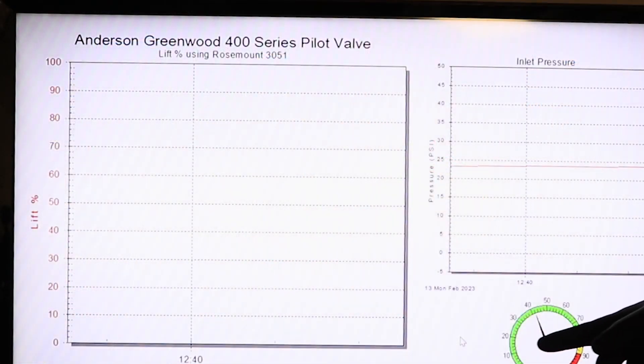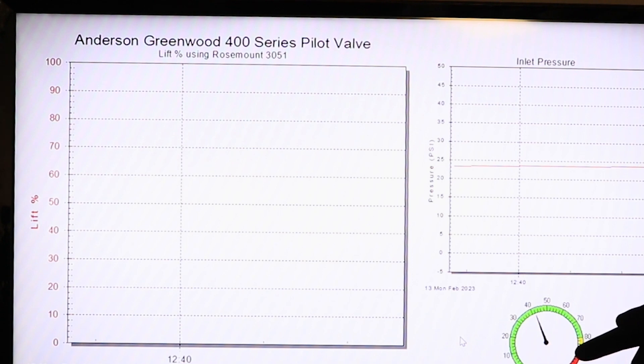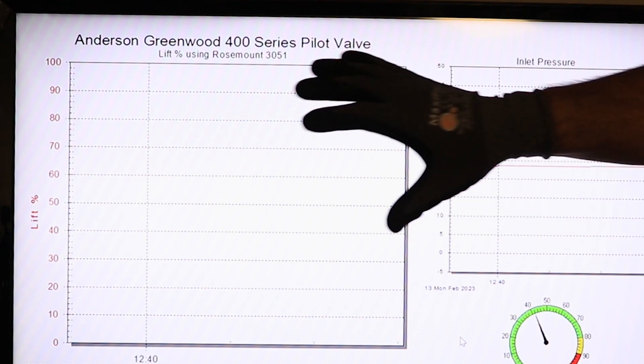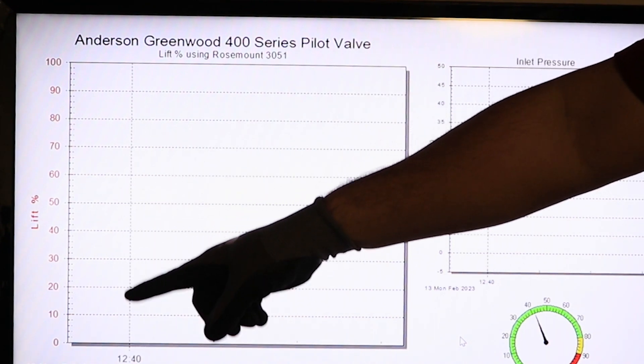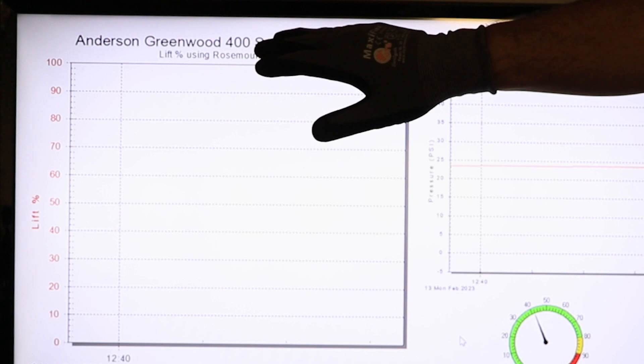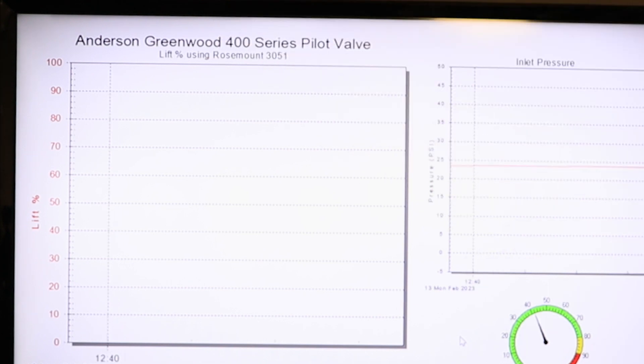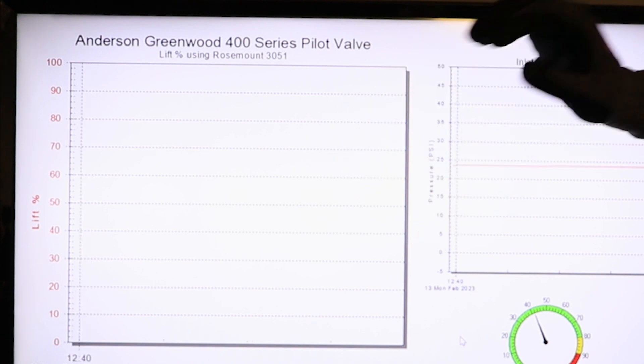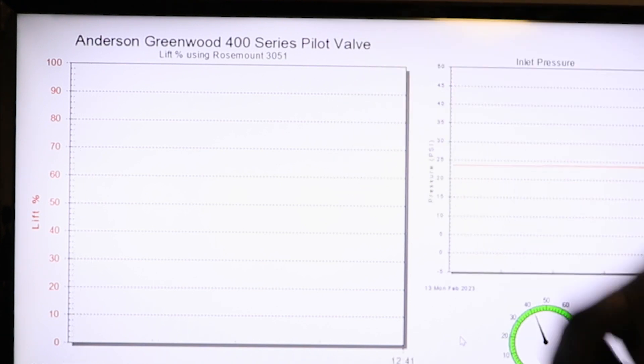In this graph, we're graphing a system pressure with a different pressure transmitter that is not part of our solution, as well as the inlet pressure. But more importantly, we're graphing the lift percent from the Rosemount 3051 that's attached to our 400 series pilot. In this graphing software, we've added the mathematical formula to convert differential pressure to lift percent.